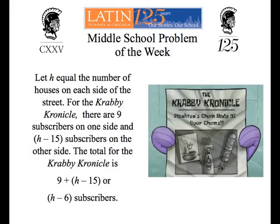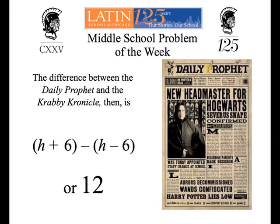To find the difference, you have two expressions: the Daily Prophet, H plus 6, take away the Krabby Chronicle, H minus 6. If you know how to simplify this expression, you will get 12.